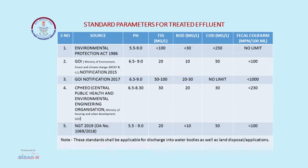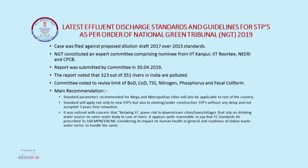With the pressure of big industrialists, the government diluted these norms by notification 2017, in which the COD limit was removed and coliform count was increased to 1000. Due to this, many NGOs and organizations filed PILs, approached the NGT, and NGT constituted a committee in which IIT Roorkee, Pollution Board, and IIT Kanpur experts were involved. NGT 2019 issued a notification which is presently applicable, restoring these limits. The main recommendation of NGT is that these standards will be applicable not only to metropolitan cities but also to villages, and no timeline will be given for existing STPs — all STPs must follow these norms.